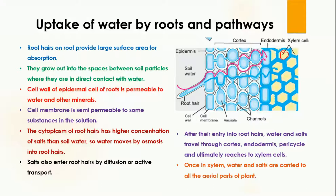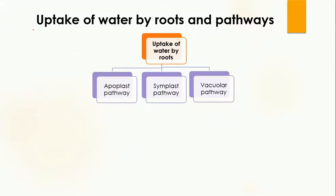When the water and salts reach the xylem cells, from these cells they move upward to the other parts of the plant. This means that xylem cells are actually responsible for the transport of water and salts from the soil to the upper parts of the plant. The uptake of water by the root is not one straight process — there are different pathways involved.